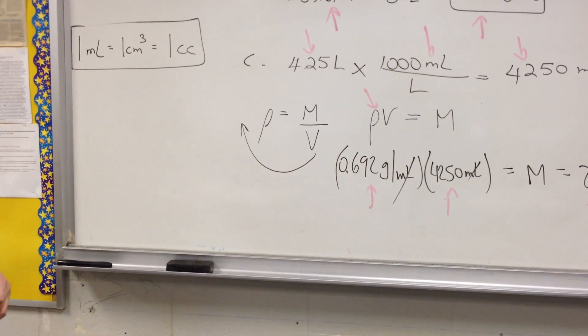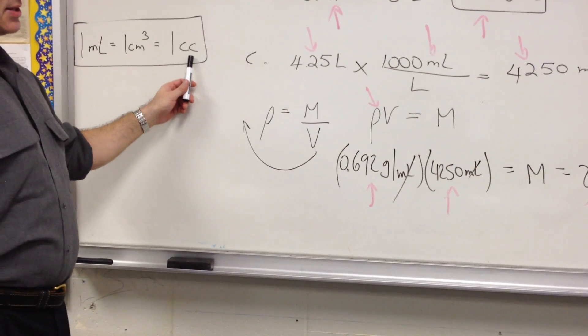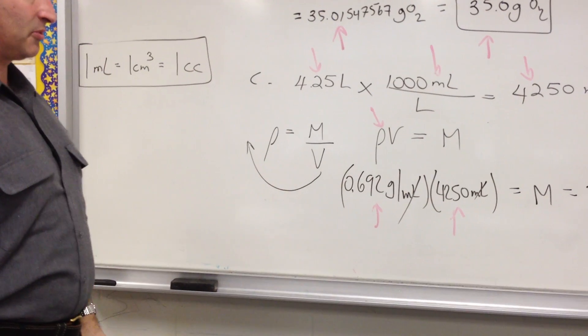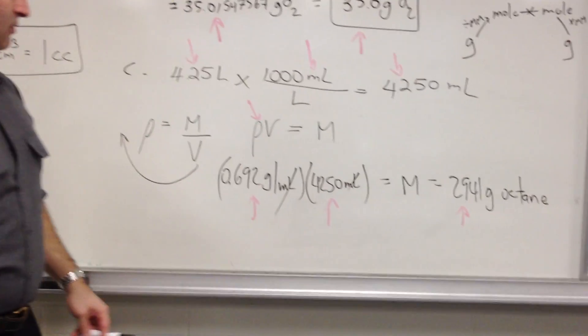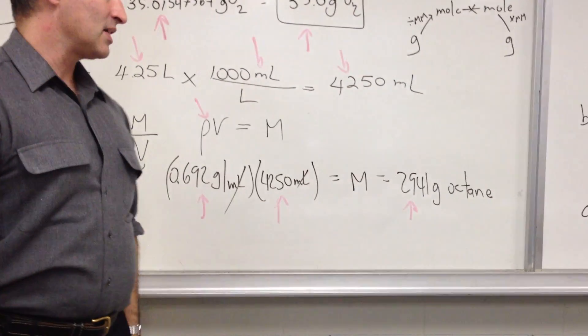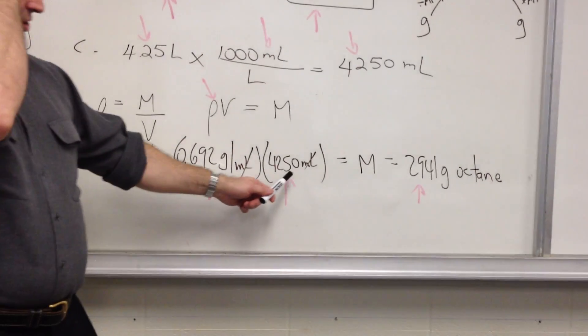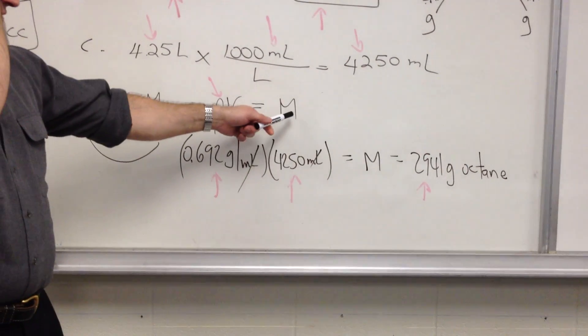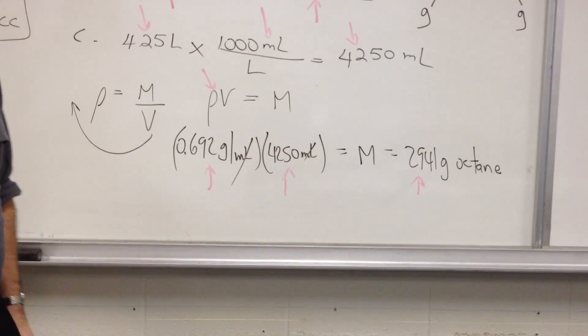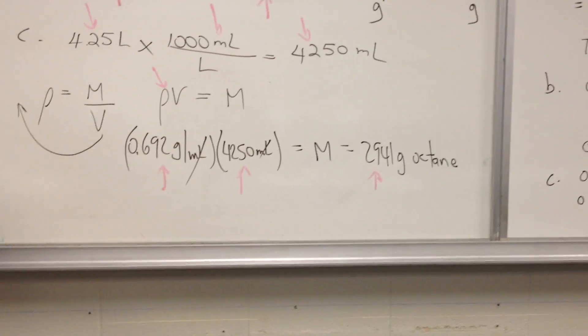mL is usually reserved for liquids, though. But it's fine to use it also for gases. Cc is not exactly an SI way of designating the unit. But it is in common usage, so we should be familiar with it. Anyway, 4.25 liters of the liquid. 1,000 mL per liter. So you get 4,250 mL. Plug in the numbers in the equation that's been rearranged to solve, to isolate the variable that you want. The density is 0.692 g per mL. The mL is canceled. And you find out that there are 2,941 g of octane.